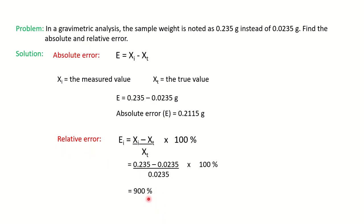If a problem comes on this topic where you have to calculate the absolute and relative error, you can use the formulas above. Absolute error is measured value minus true value, and the relative error is the absolute error divided by the true value times 100. We measure the relative error in percentage.